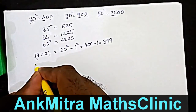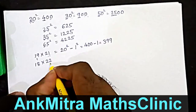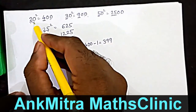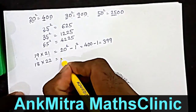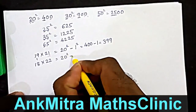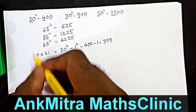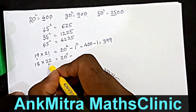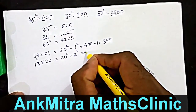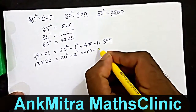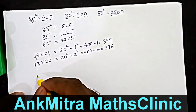Similarly we can calculate 18 multiplied by 22. Again, these two numbers are equidistant from 20 — two away from 20. So we will start with 20 squared and then subtract the square of the difference, which is two. Two squared is four. So the answer will be 400 minus 4, which is three hundred and ninety-six.